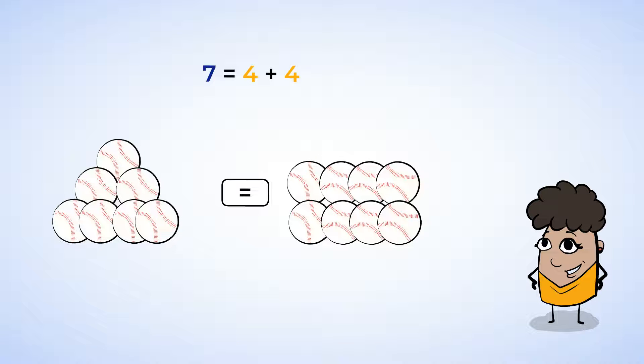Have a look at this. It says that seven equals four plus four. Hmm, is that correct? Well, let's think about it. What's four plus four? Four plus four equals eight. And seven and eight are not the same. So seven does not equal four plus four. This is not correct.